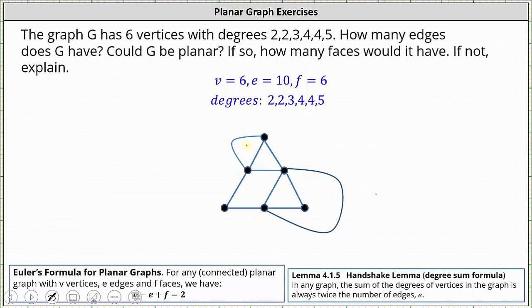And now let's count the number of faces: 1, 2, 3, 4, 5, 6 faces. So the graph does have six vertices, 10 edges, six faces.